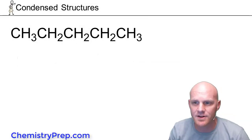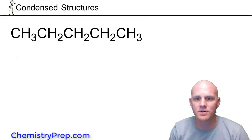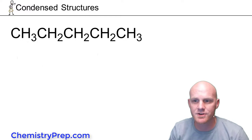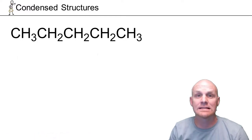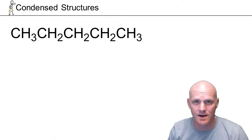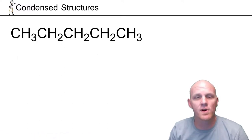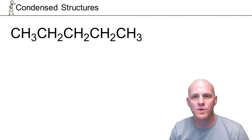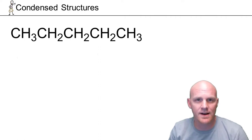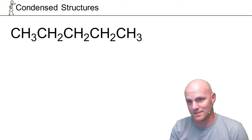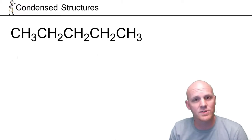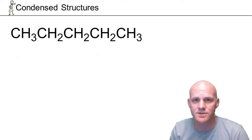Let's have a discussion on the different ways we represent molecular structures in organic chemistry. In organic chemistry we are very lazy. If we can avoid drawing carbons and hydrogens, we will. We'll see that with line angle structures here in a little bit. If we can avoid drawing all the bonds, that's what we do with condensed structures.